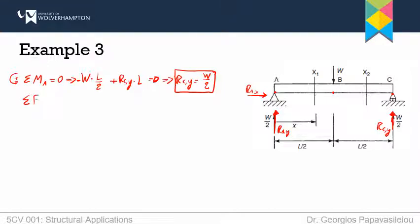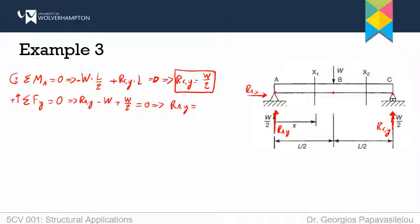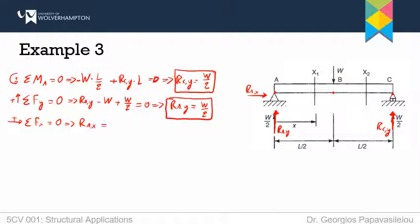Now I apply the sum of forces in the Y direction, which has to be equal to zero, to calculate RAY. Assuming upward forces are positive: RAY minus W plus W over 2 equals zero, so RAY equals W over 2. Finally, the sum of forces in the X direction equals zero, and since there is no horizontal force, RAX equals zero.